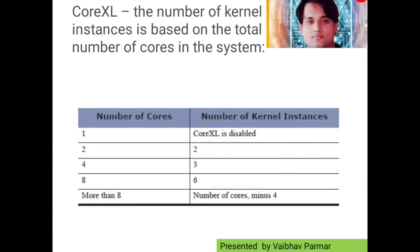Now let's see how Core XL cores get assigned. When you enable Core XL, the number of kernel instances is derived from the total number of cores available in the gateway. If your gateway runs on only one core, Core XL cannot be enabled. For two cores, two kernel instances are derived. For four cores, three kernel instances are derived. For eight cores, six kernel instances are derived. For more than eight cores, the total derived cores equal the number of cores minus four — for example, 24 cores minus 4 gives 20 kernel instances.